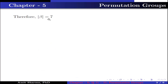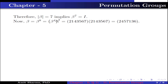Therefore, the order of beta is 7, which implies beta^7 is identity. Now beta can be written as beta^8 (since beta^7 is identity), which equals (beta^4)^2. We multiply the permutation by itself: 2 maps to 1, and 1 maps to 4, so 2 has image 4. Then 4 maps to 3 and 3 maps to 5, so 4 has image 5. Then 5 maps to 6 and 6 maps to 7, so 5 has image 7. Then 7 maps to 2 and 2 maps to 1, so 7 has image 1. Then 1 maps to 4 and 4 maps to 3, so 1 has image 3. Then 3 maps to 5 and 5 maps to 6, so 3 has image 6. Then 6 maps to 7 and 7 maps to 2, so 6 has image 2 — the cycle is complete.